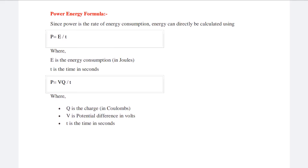P can also be written as VQ by T, where Q is the charge in coulombs, V is the potential difference in volts, and T is the time in seconds.